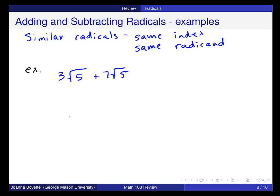So here, these are similar radicals. I have a square root in the first term and a square root in the second term. And the radicand in both is 5. So I can add these together. To do that, you just add these coefficients, 3 plus 7. And it's 10 times the square root of 5.